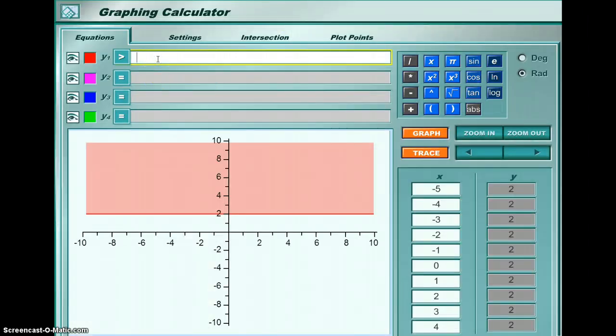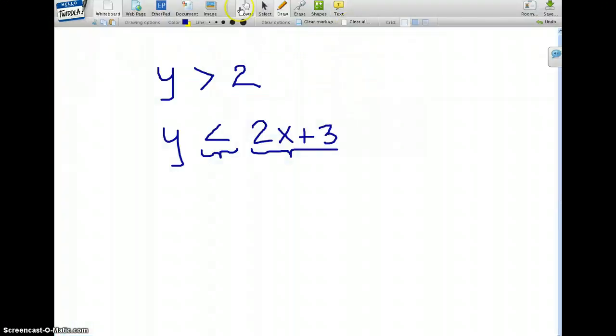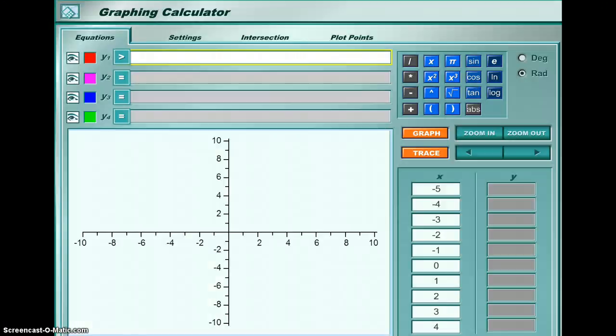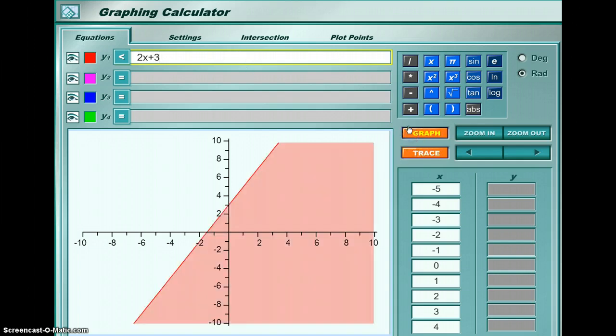Let me clear this. And I want y less than 2x plus 3. So I'm going to click here. I'm going to choose the less than. Once you choose it, now you type the expression 2x plus 3. Then you hit the graph. And that's how you graph the inequality in the calculator.